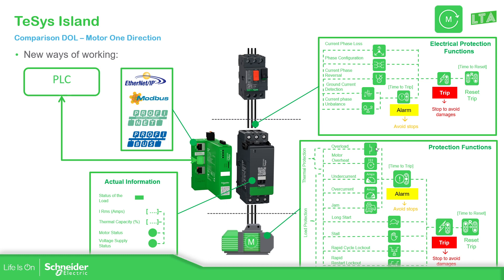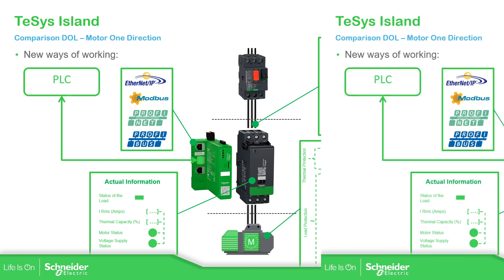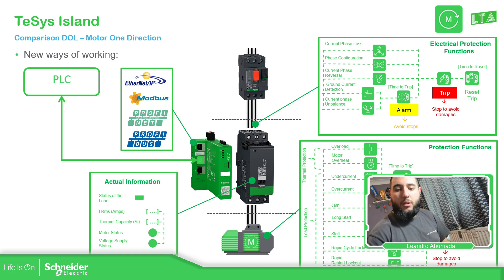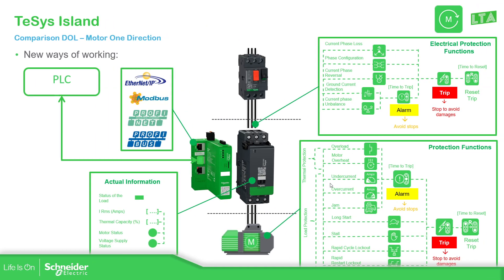We also have the possibility to use protections: electrical protections, thermal protection, and load protection. You have the standard overload, which is what we replace the contactor and overload with using the starter. But we also have different things — undercurrent, overcurrent, jam, long start, stall, rapid cycling, rapid restart, and lockout. These can give us alarms so we can avoid having to stop production. And if the alarm is not acted upon, of course we trip in order to avoid any damage.